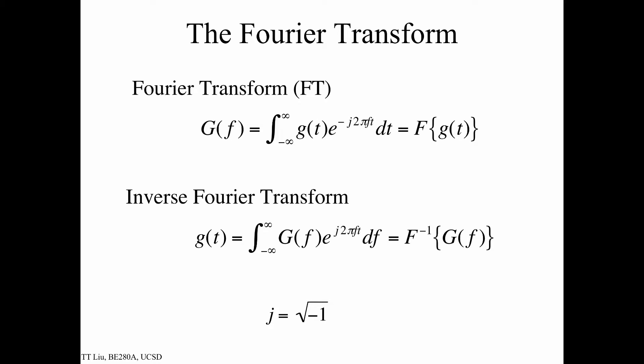The definition of the Fourier transform is fairly straightforward. We want to take the Fourier transform of a function, say g(t). We simply multiply it by a complex exponential, here e^(-j2πft), where j equals the square root of minus 1. f, in this case, denotes temporal frequency. We integrate that product from minus infinity to infinity, and we denote the output as the Fourier transform G(f). We can also denote this as taking the Fourier transform of some function g(t).